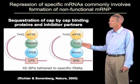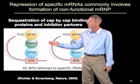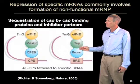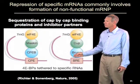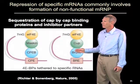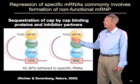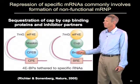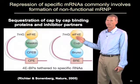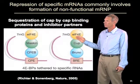Here's an example: CUP in Drosophila, or Maskin in Xenopus. Those proteins bind to other RNA sequence-specific binding proteins to create a complex which keeps the CAP bound by the CAP binding protein, but is now unable to go on by binding to other translation factors and enter translation.